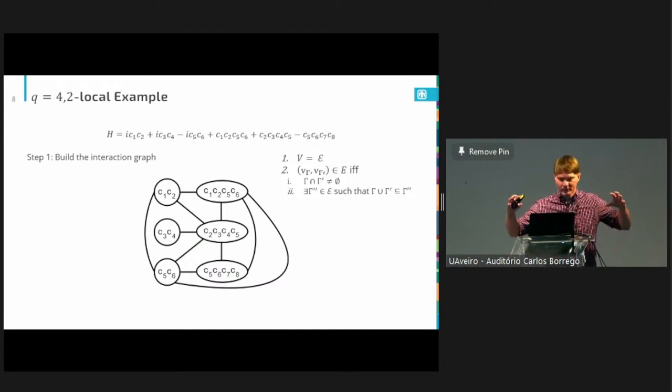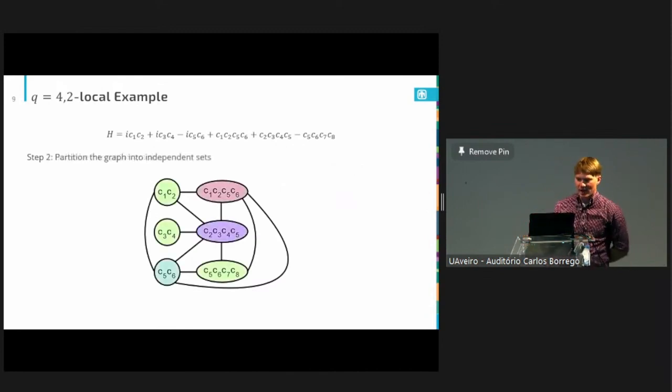And we say that H is K sparse if for every Majorana operator, so for every CP, we have at most K gammas for which CP is in gamma. So those are just the conditions we're working with. Before I dive into the algorithm, I think it's easiest to explain what's going on in a simple, small example. We're going to look at the 4-2 case because this is in general the setting that we care the most about from a physically motivated setting.